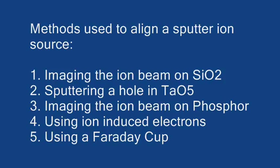We'll be looking at the five common methods used to line up ion sources. These include imaging on SiO2 and seeing the beam in real time, burning a hole in a piece of tantalum oxide, imaging through the vacuum viewport on a piece of phosphor, low energy electrons through the spectrometer, and using a Faraday cup.